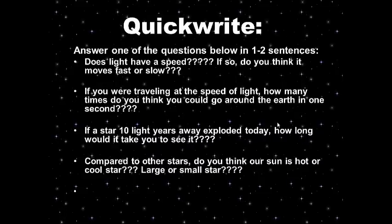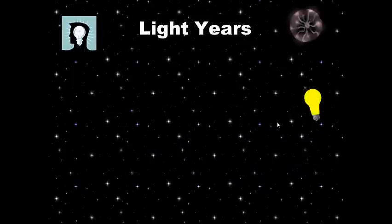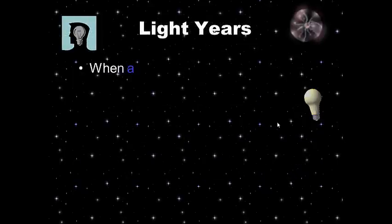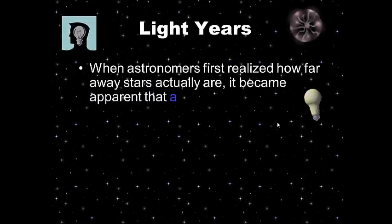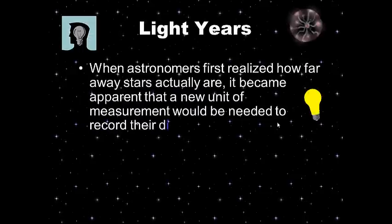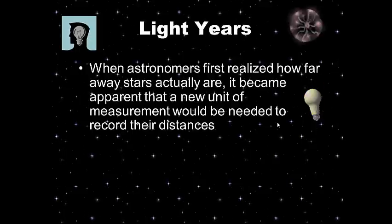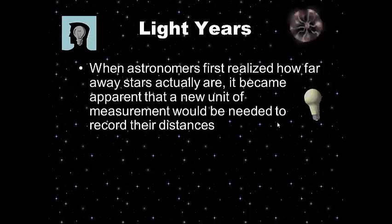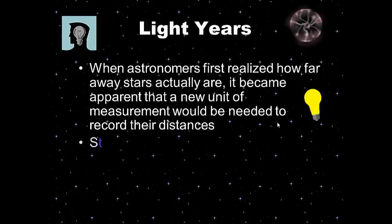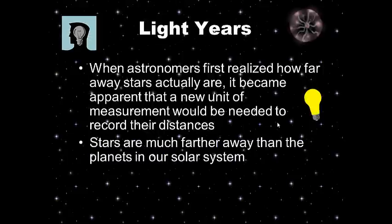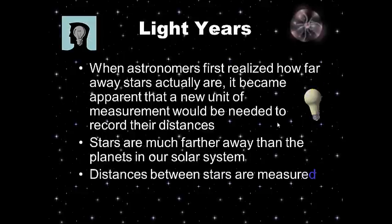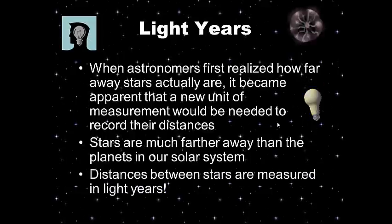When astronomers first realized how far away stars actually are, it became apparent that a new unit of measurement would be needed to record their distances. Stars in the night sky are much, much farther away than the planets in our solar system. So we needed a new unit of measurement — distances between stars are measured in light years, the distance light travels in a year.